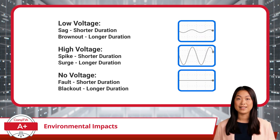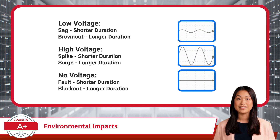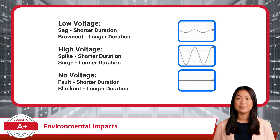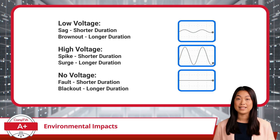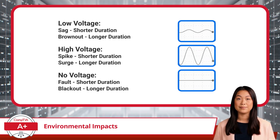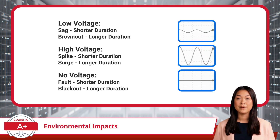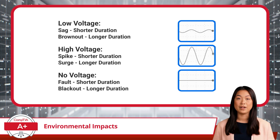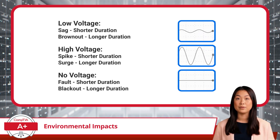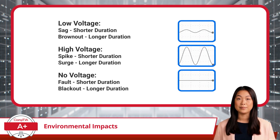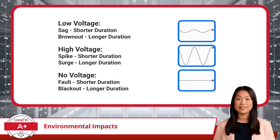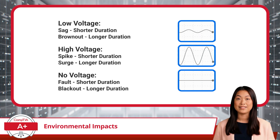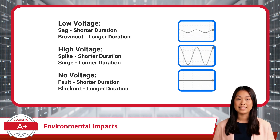High-voltage or over-voltage events involve too much power flowing through the system. Spikes are sudden bursts, while surges are prolonged and more destructive. Both can fry circuits in an instant. That's why a surge suppressor is a must-have for every setup — it absorbs excess energy and shields your equipment from harm. Finally, we have no-voltage events, where power cuts out entirely. A fault might cause a momentary disruption, but a blackout can last much longer and lead to hardware damage or data loss. An uninterruptible power supply is critical here, as it can provide enough power to keep your systems running briefly. If the blackout occurs for an extended period, you may need to consider a generator to maintain operations long-term.